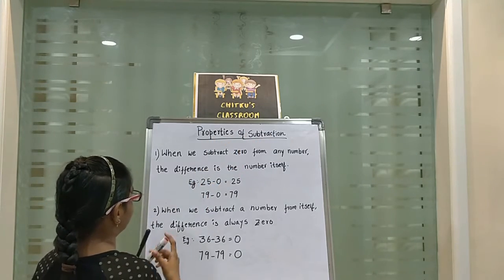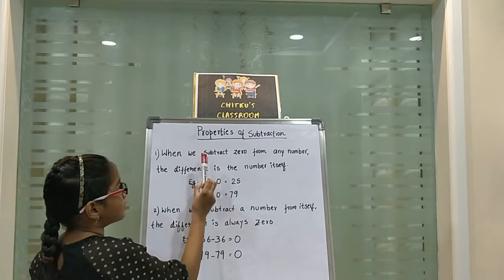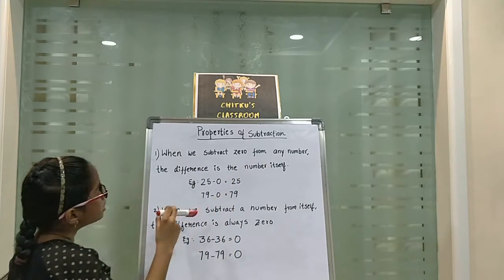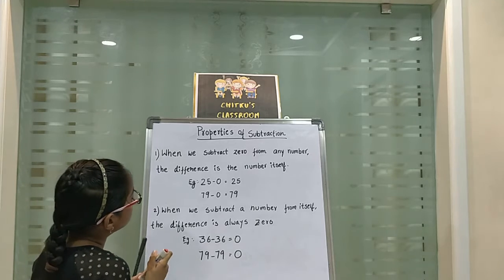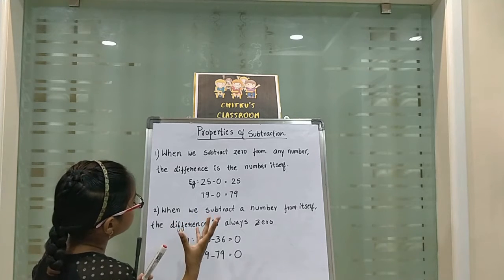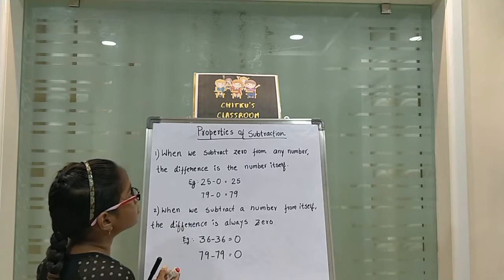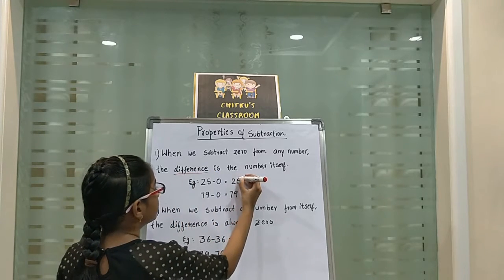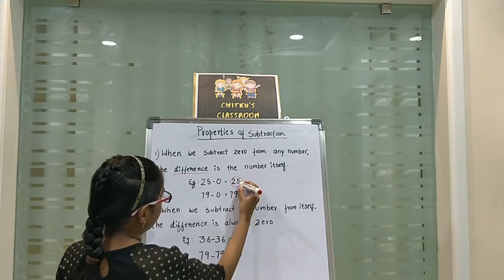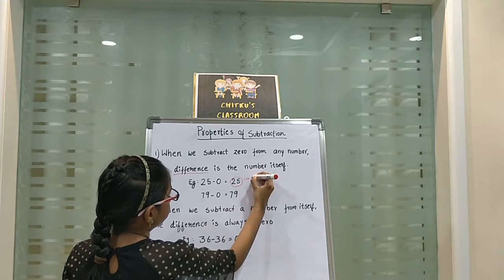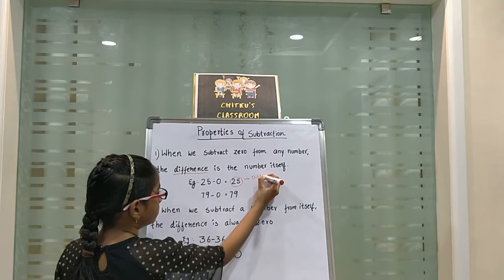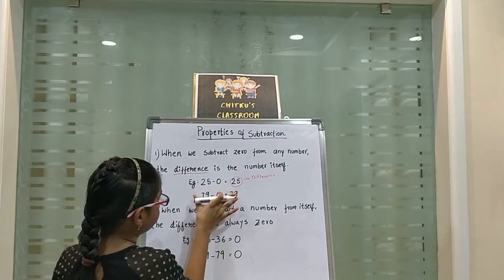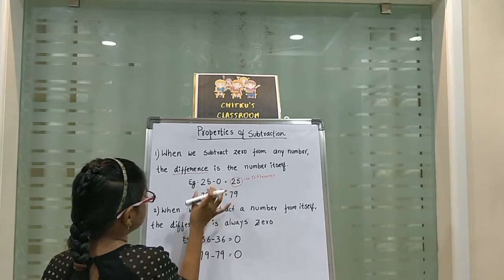Let's learn the first property. When we subtract 0 from any number, the difference is the number itself. Difference means the answer of the subtraction problem — difference is the solution of the subtraction problem.